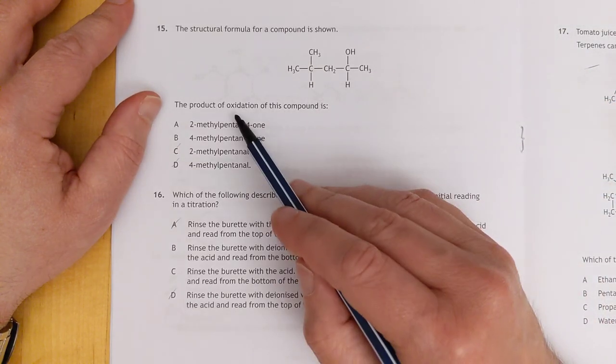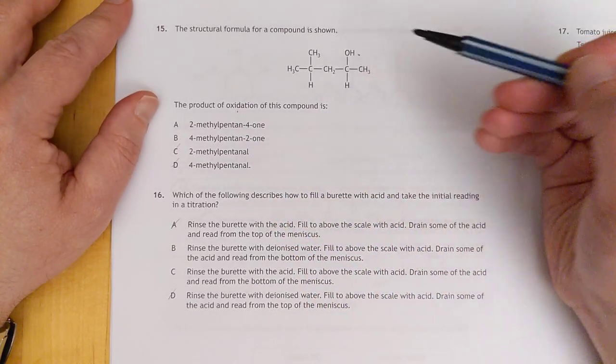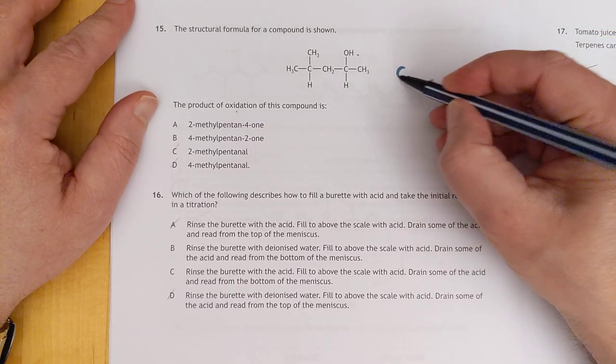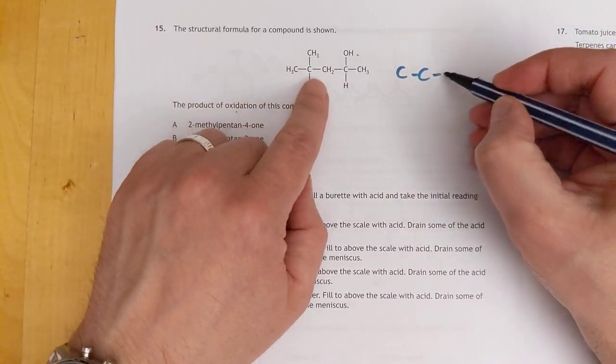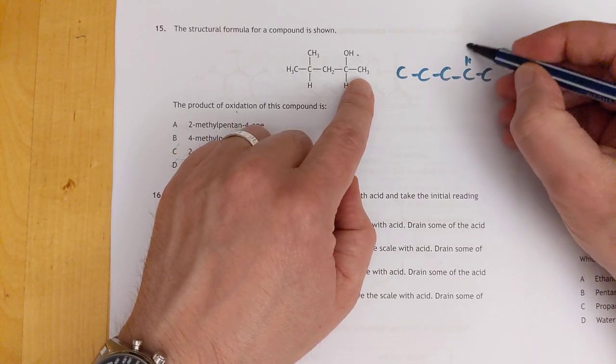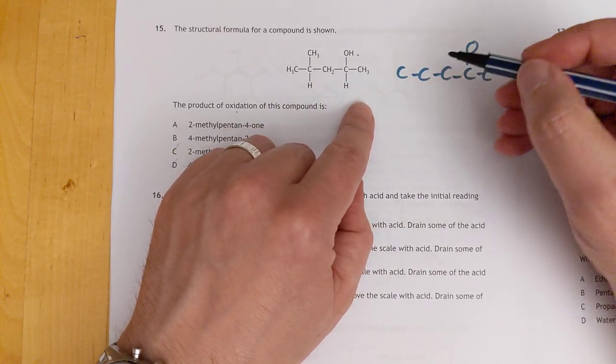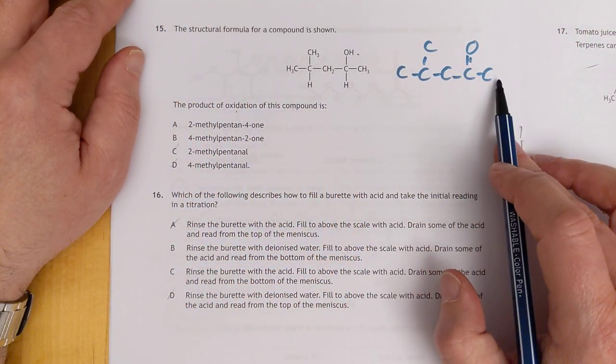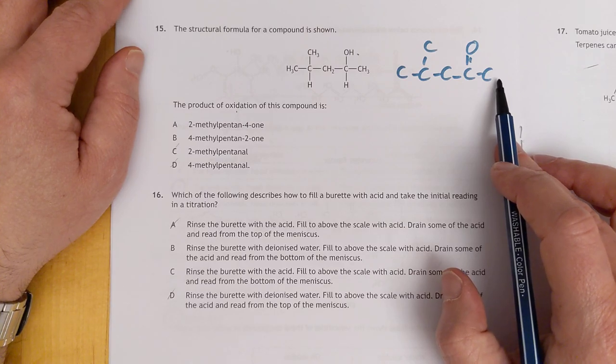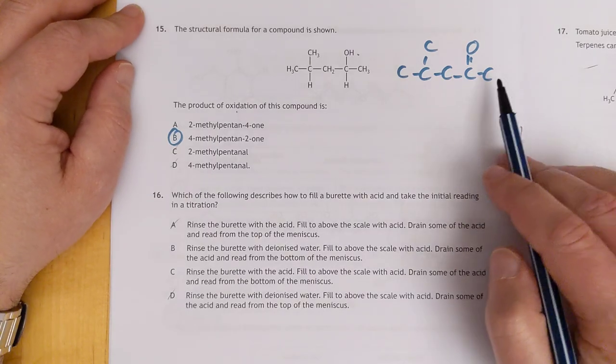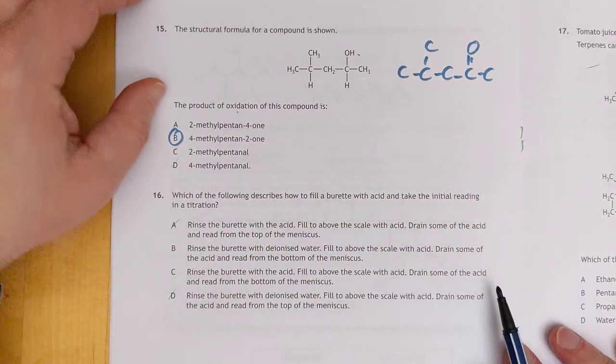Oxidation of this compound. There is a secondary alcohol, which means you're going to create a ketone. So one, two, three, four, five. Ketone is going to be on there. And you're going to have a branch on there. So one, two, three, four, five. It's a pentan-2-one. Don't need to go any further. One, two, three, four methyl. Double checking.